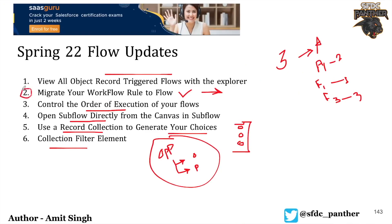So we have covered Trigger Explorer, execution order, sub-flow navigation, record collection choice sets, and the Collection Filter — almost all the important updates that are part of Spring '22 for Flow Builder. That's it for this video. If you have any questions please put them in the comments, feel free to email us with any scenarios, and please do like, share, and subscribe. Thank you.